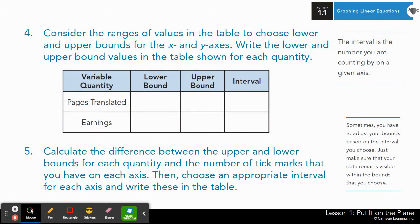Alrighty, moving forward. Number four, it says, consider the ranges of values in the table to choose lower and upper bounds for the X and Y axis. Write the lower and upper bound values in the table shown for each quantity. Now the lower bound and the upper bound just means where does your number, where are your numbers going to start on your X axis and where are they going to end on your X axis? Well, X and Y axis, where your number is going to start and end on your graph. And then the interval, read this note off to the side so that you can understand what an interval is.